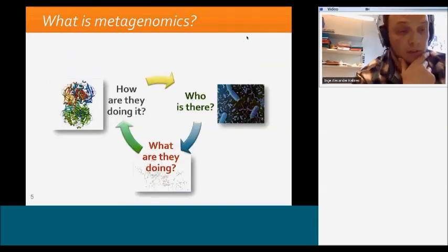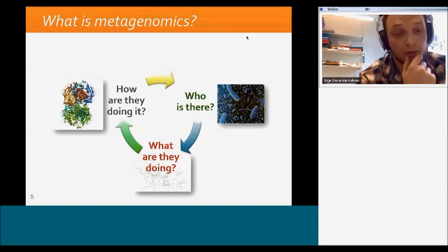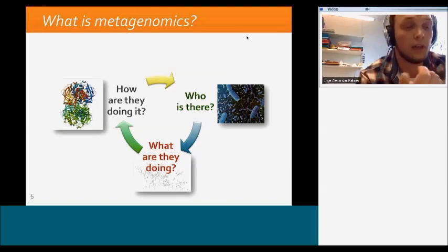Even though metagenomics has come a long way, most of the research performed can be summed up in three specific questions: Who is there? What are they doing? How are they doing it? These questions relate to specific types of tasks within metagenomics. To answer 'who is there,' you can do a taxonomic classification based on 16S rRNA or other marker gene databases.